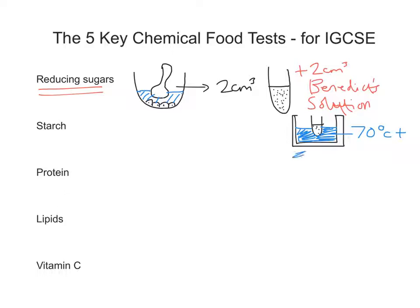We get a colour change from blue ultimately to what's called brick red. That's what we're looking for — that is a positive result, a positive test for a reducing sugar. Low concentrations of reducing sugars show other slight colour changes: the blue turns slightly green with a small concentration, then that green can turn yellow, and then we get brick red. But a good sizable concentration of reducing sugar will give a brick red colour.